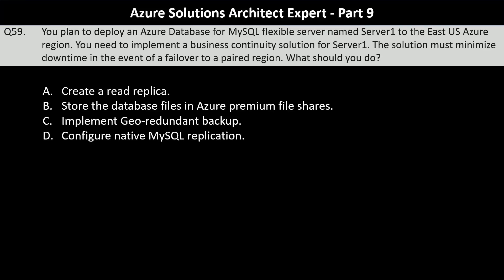Hello and welcome to part 9 of our AZ305 exam practice question series. We are starting with question number 59. You plan to deploy an Azure Database for MySQL Flexible Server named server1 to the East US Azure region. You need to implement a business continuity solution for server1. The solution must minimize downtime in the event of a failover to a paired region. What should you do?